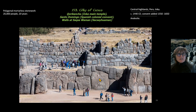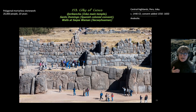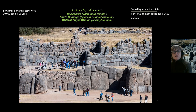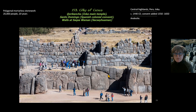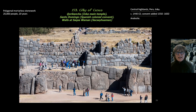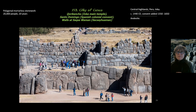More form: unlike the Coricancha's Ashlar masonry, the walls at Sasquawaman have a polygonal shape to them. It would have taken 20,000 people 20 years to create this, and they weren't done by the time the Spanish arrived in 1535.